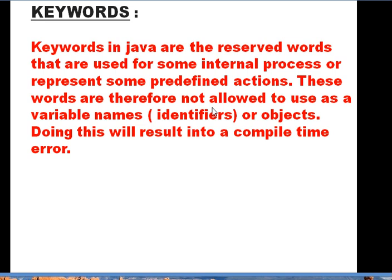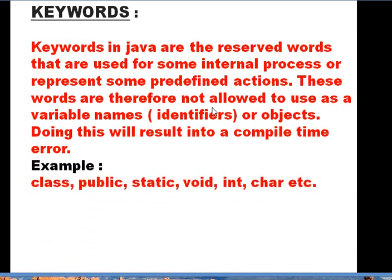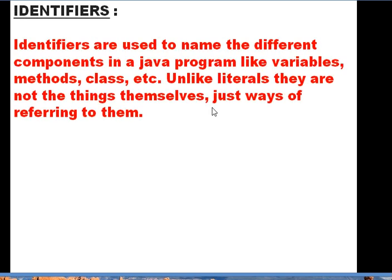Let us discuss these tokens one by one. The first is keyword. Keywords in Java are reserved words that are used for some internal process or represent some predefined action. They are therefore not allowed to be used as variable names or identifiers. If we try to use keywords as identifiers, it will result in a compile-time error — a syntax error — because keywords have their own specific task. Examples of keywords are: class, public, static, void, int, char, etc.